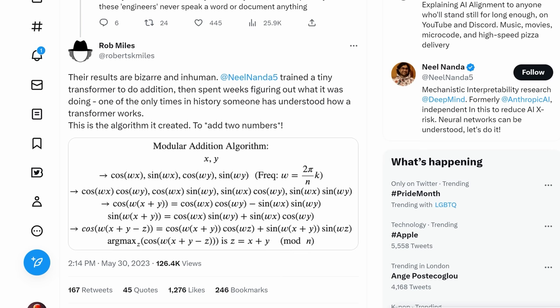As you can see, it said, therefore t equals 19 is not the solution to the problem. The calculation shows that the correct answer is indeed t equals 17. And obviously the benefit of code interpreter is you get the working out as well. So I want someone to explain to me why code interpreter wouldn't be even more of a step forward in interpretability, not to mention in accuracy, of course. Also bear in mind this tweet by Rob Miles. He said, these models or engineers never speak a word or document anything. Their results are bizarre and inhuman. And then he links to this prominent mechanistic interpretability researcher at Google DeepMind. He trained a tiny transformer to do addition, then spent weeks figuring out what it was actually doing.